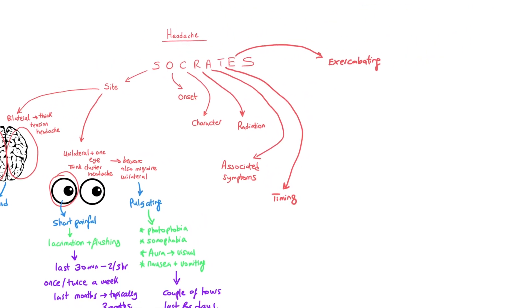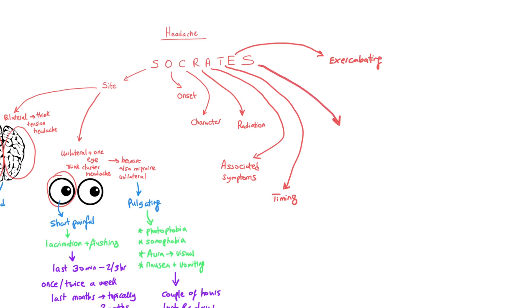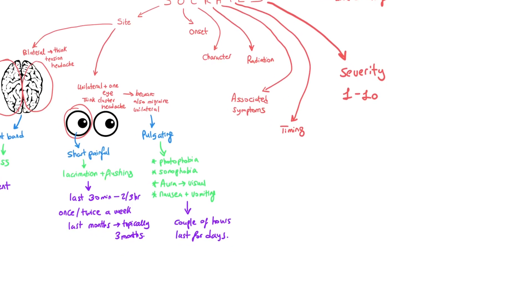Our last point is S — Severity. I normally ask patients to score it from 1 to 10, with 10 being the worst, and they tell me based on their subjective symptoms. After finishing SOCRATES, you move to your usual history components: past medical history, family history, social history, and drug history — checking for allergies and so on. And don't forget to address the patient's Ideas, Concerns, and Expectations.